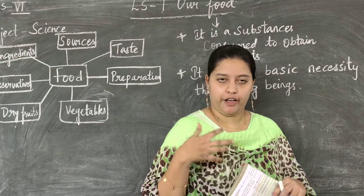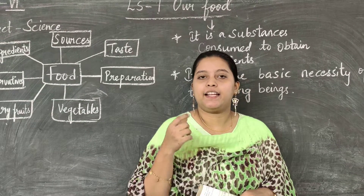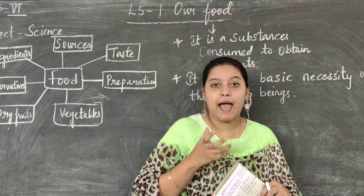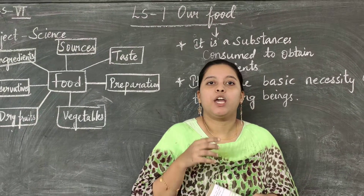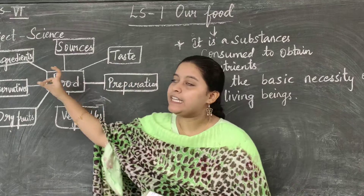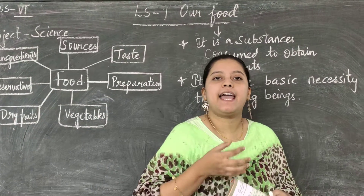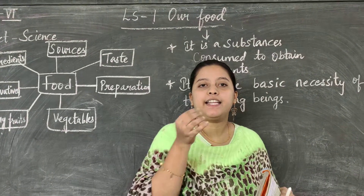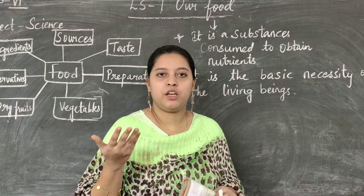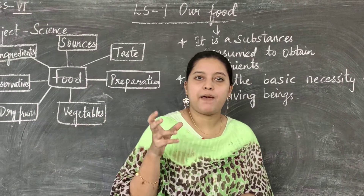If you go to a market or your parents bring a biscuit packet, chips bag, chocolate, or canned food, you will see a box labeled 'Ingredients' on the packaging — it lists everything used to prepare that product. You can check this on jam bottles and biscuit packages at home.